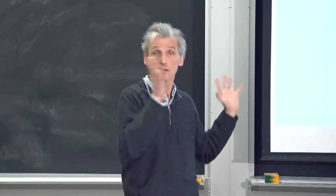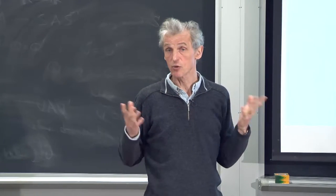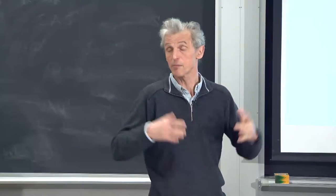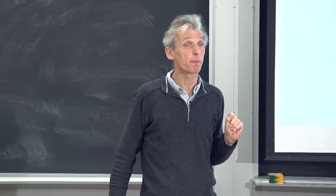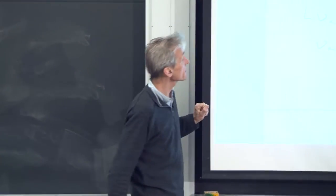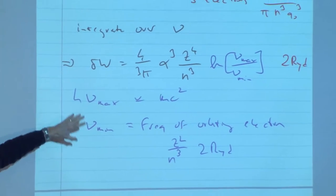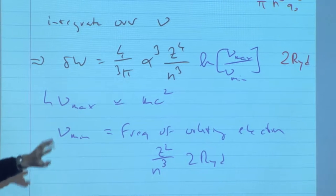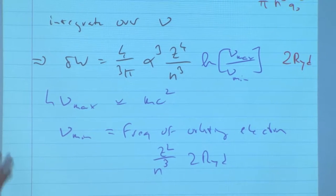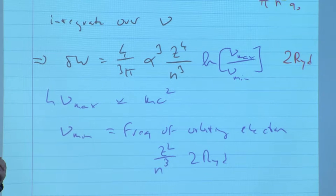Similarly to what we saw for the Darwin term, this averaging of the Coulomb potential takes away the singularity of the Coulomb potential and therefore lowers the binding energy of the electron. Today I want to say a few more words about the result we derived. When we integrated over all modes of the electromagnetic spectrum, we needed upper and lower cutoffs due to logarithmic singularities — an upper cutoff at the rest mass of the electron.